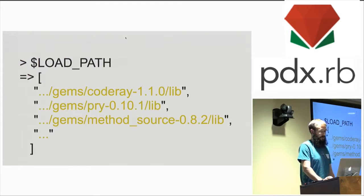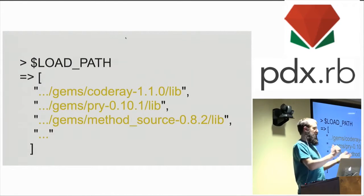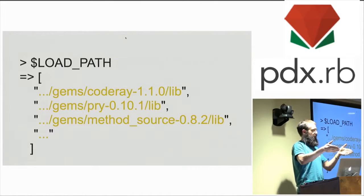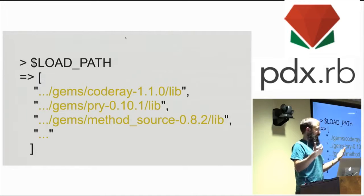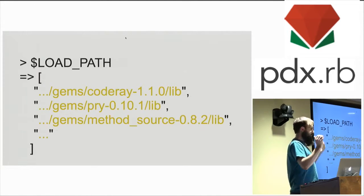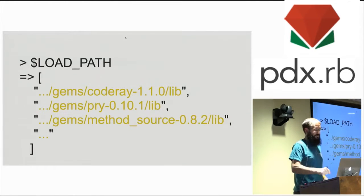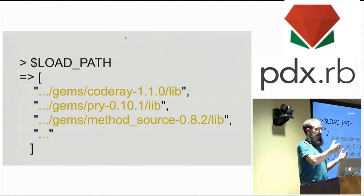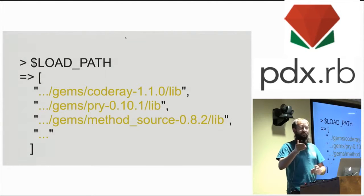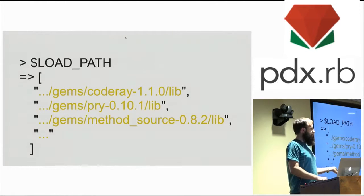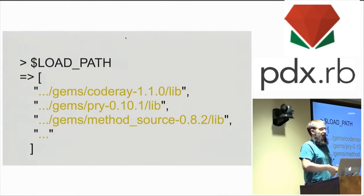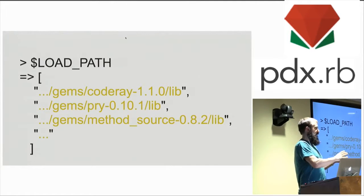We'll start with bundler setup. In Ruby, when you say require a particular file, Ruby will look at a global variable called load path, and it looks for that portion of the path you gave it in any of those locations. It's an array of strings — just locations on your disk. What bundle setup does is it looks at your Gemfile, takes those gems, and puts them into the load path, so all of them are available to require. It also patches RubyGems so the only things it will find are in this load path.